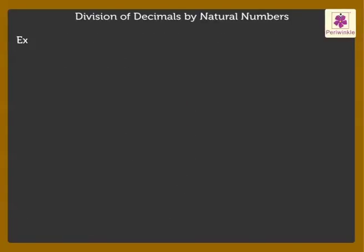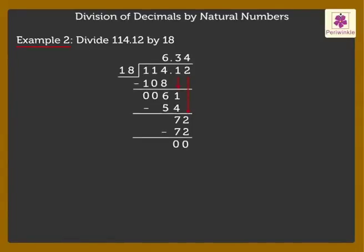Now, let's solve another example. Here, the decimal point is placed next to 6. Thus, we get the quotient as 6.34 and remainder as 0.